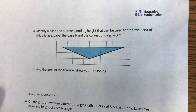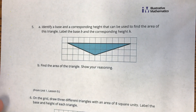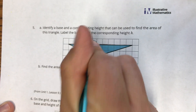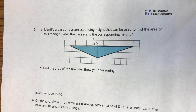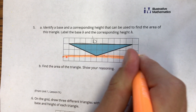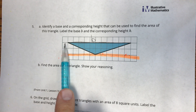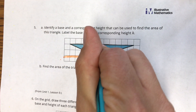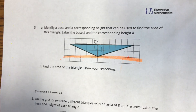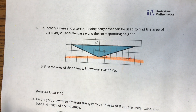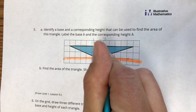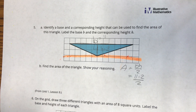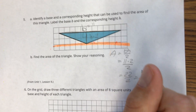Question 5: identify a base and a corresponding height that can be used to find the area of this triangle. Label the base B and the corresponding height H. The height can be any line connecting the base with the opposite vertex at a right angle. Your base here, if you count, is 11 and your height is 2. Area equals base times height divided by 2: 11 times 2 divided by 2 equals 11 square units.